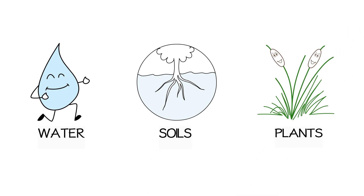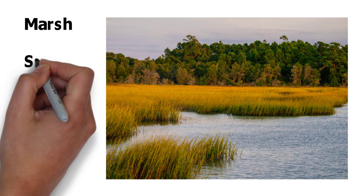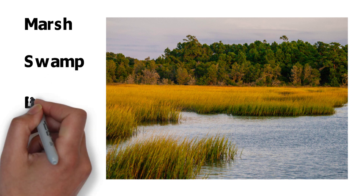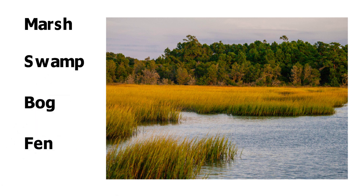But are all wetlands the same? Many people think of wetlands as marshes, but there are actually many other types of wetlands. Some other common types include swamps, bogs, and fens.